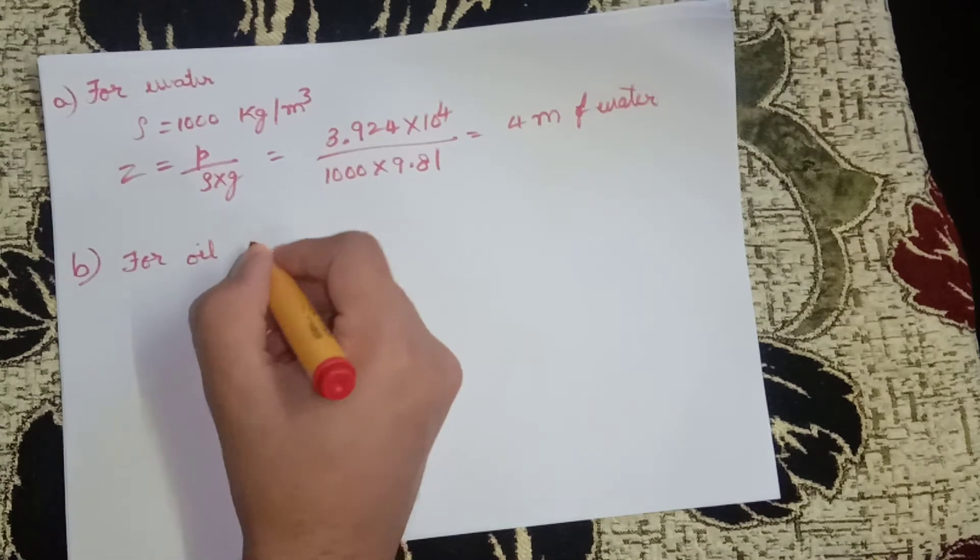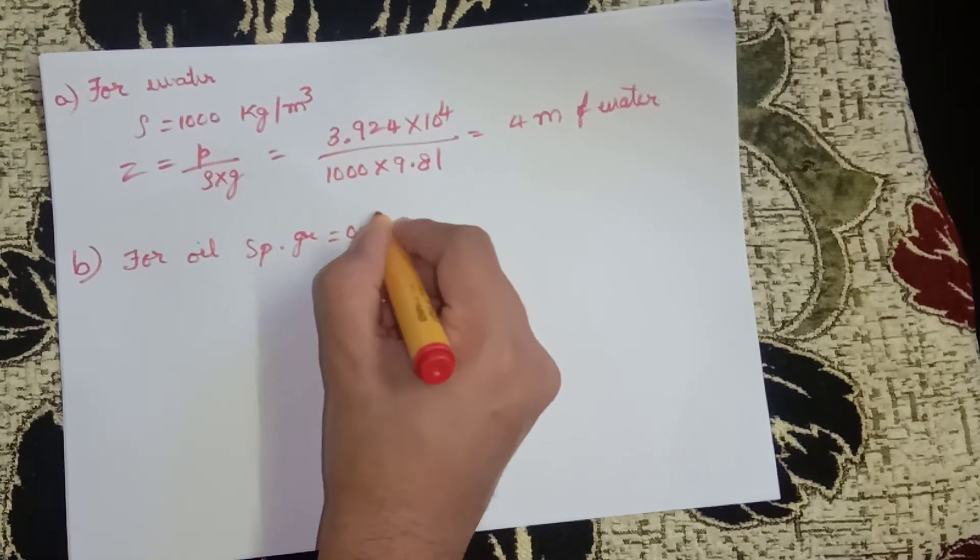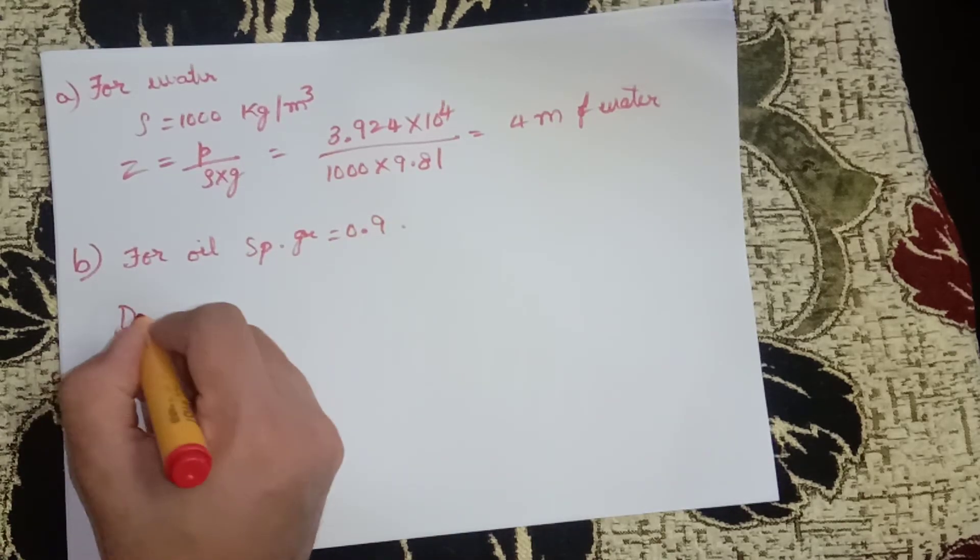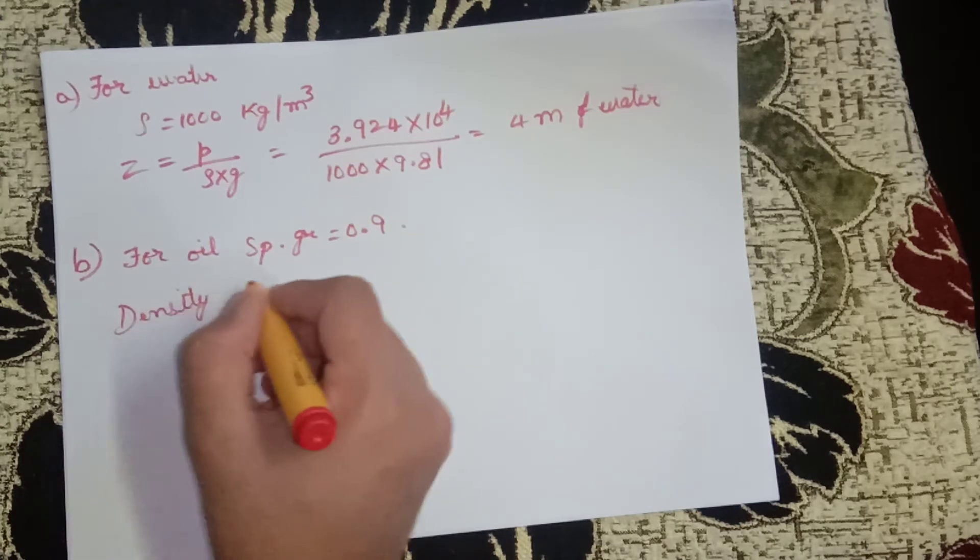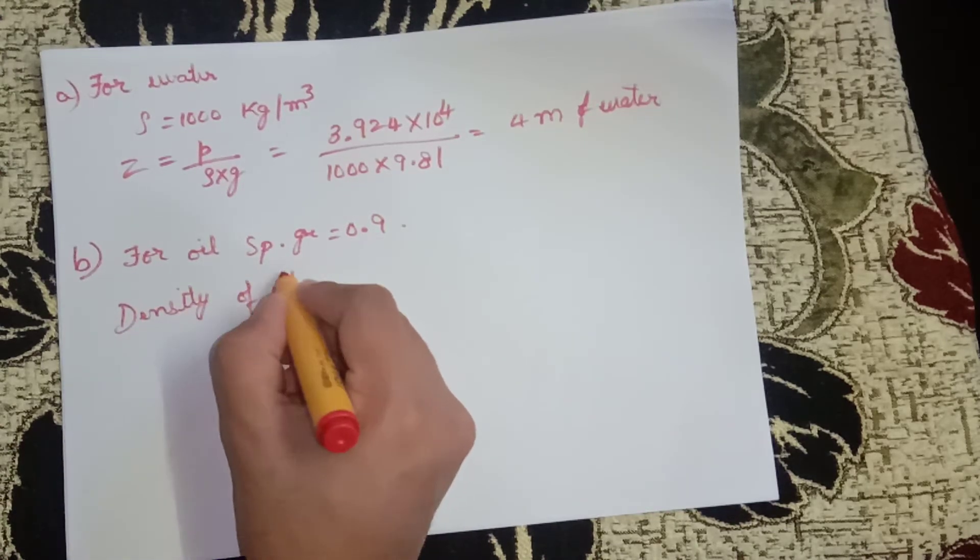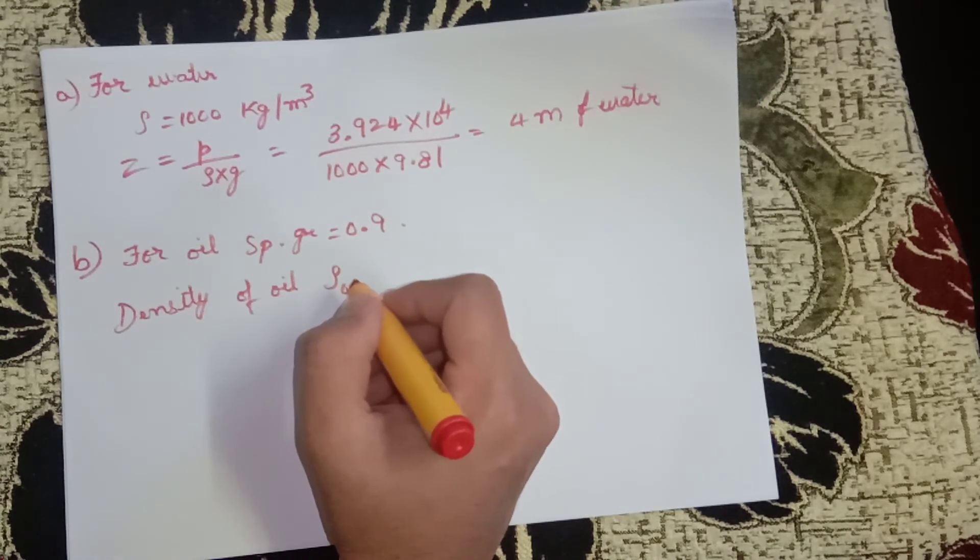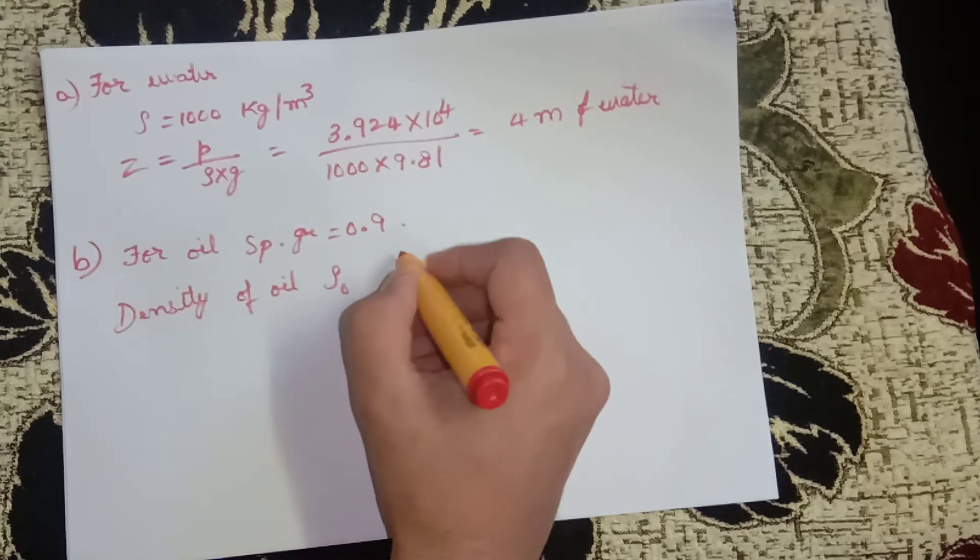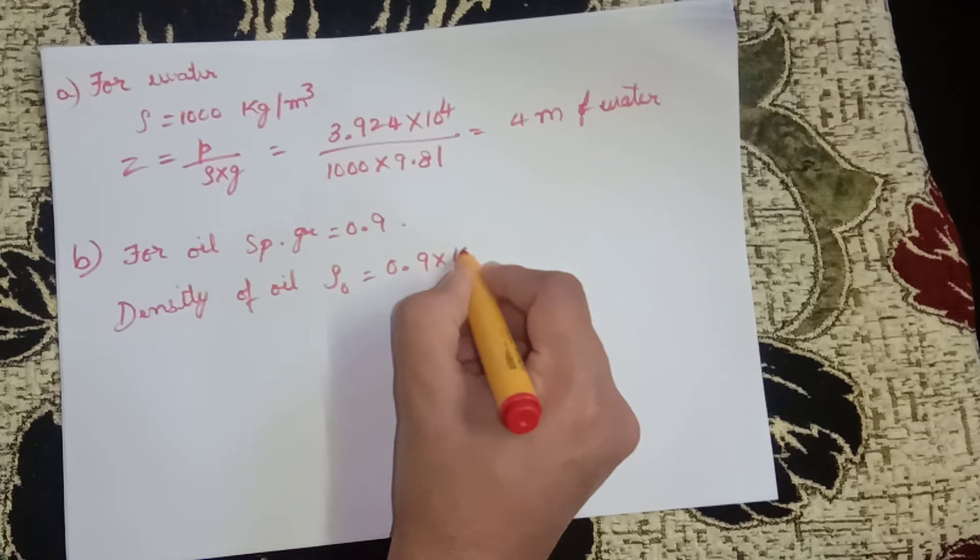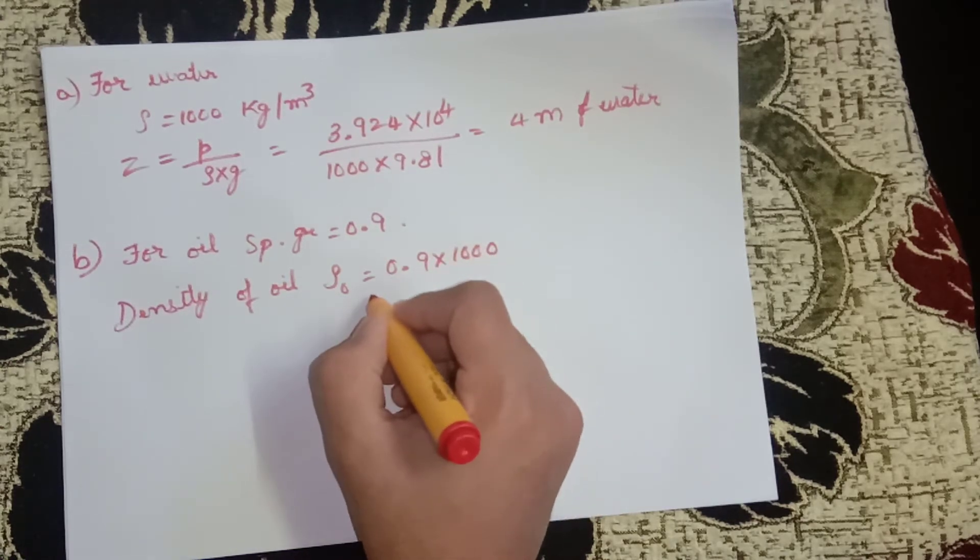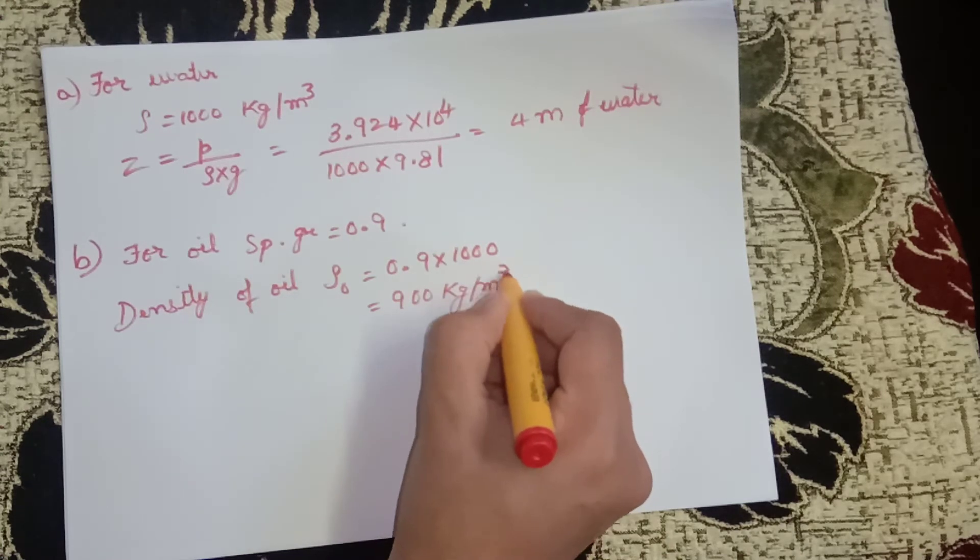For oil, specific gravity equals 0.9. Density of oil rho₀ equals 0.9 × 1000, that is 900 kg per meter cube.